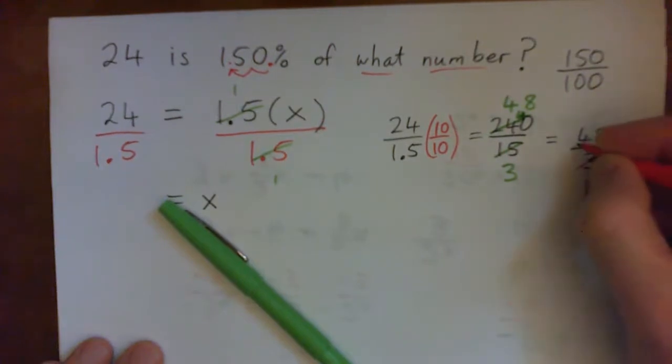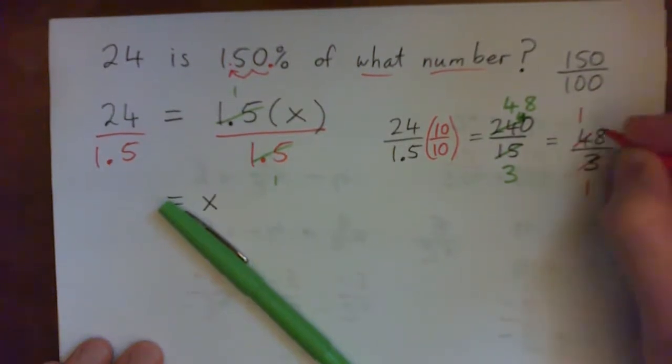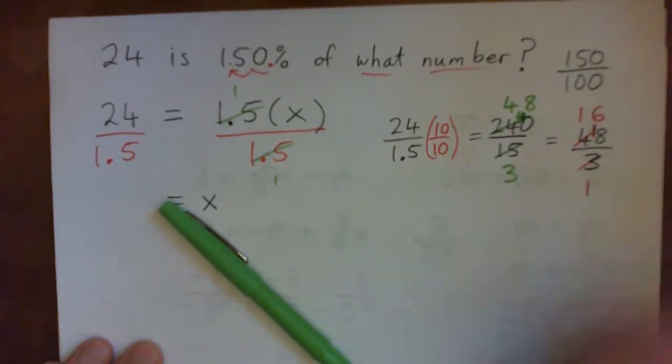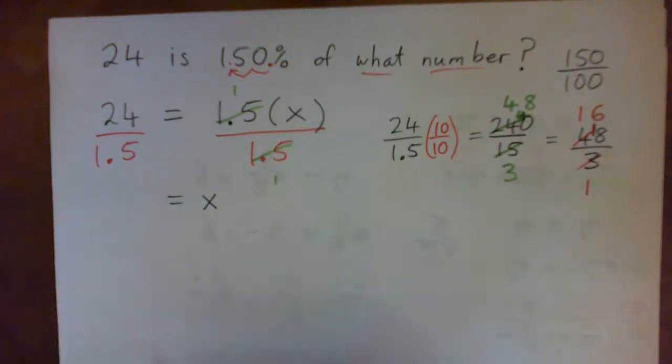I'll do it now. 3 into 3 once. 3 into 4 one time. Remainder 1. 3 into 18, 6. So we get 16 over 1. Or just 16.